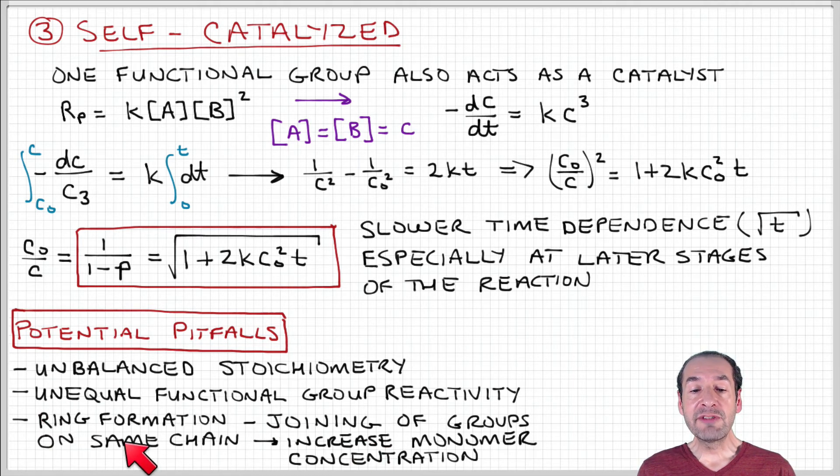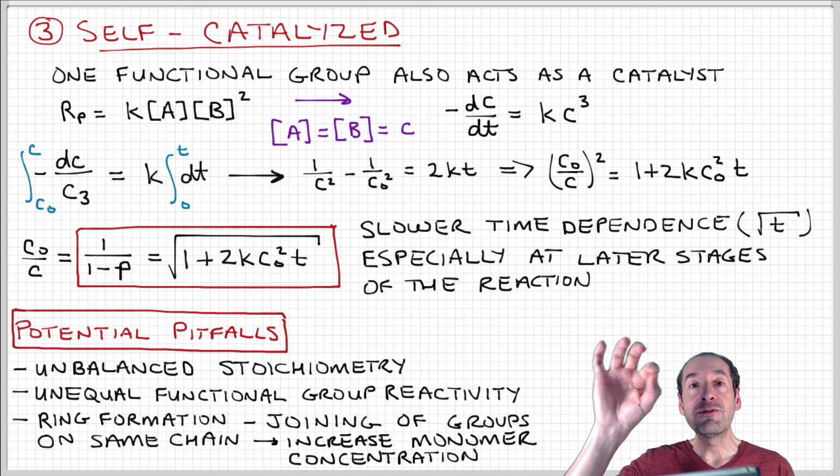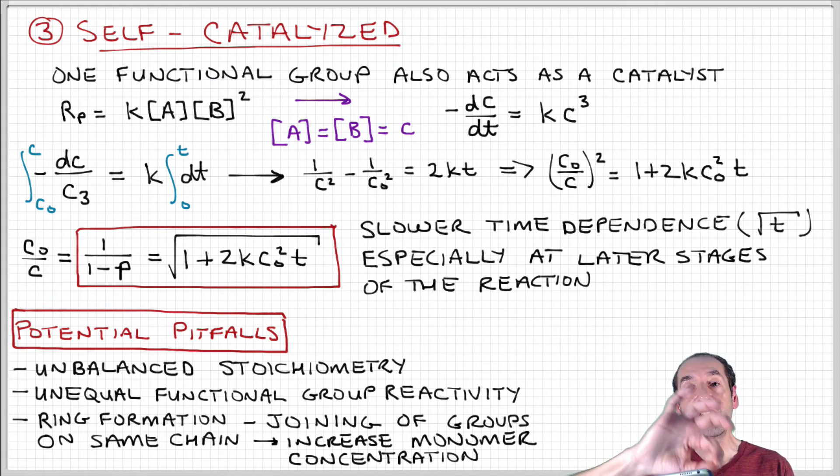Another thing that can happen that we haven't talked about is ring formation. Functional groups just need to come into close proximity in order to experience a reaction. So it's possible that a functional group on one end of a growing chain could find a functional group on the other end of the same chain, and those two could experience a reaction.